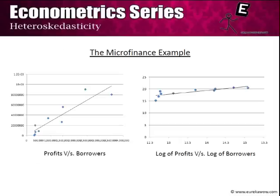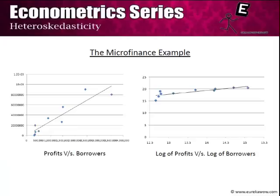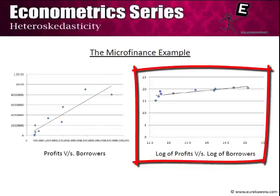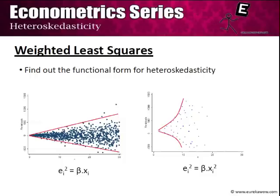Take the microfinance graphical example, in which we plot profits versus borrowers. On the left-hand panel, when we plot profits versus borrowers, we see a probable problem with heteroscedasticity—as the number of borrowers goes up, profits go up but also the variability in profits increases. However, when we take logs of both profits and borrowers, we see that the problem of heteroscedasticity has been somewhat contained. The sample points are somewhat closer to the sample regression function, and heteroscedasticity does not seem to be as much of a problem.